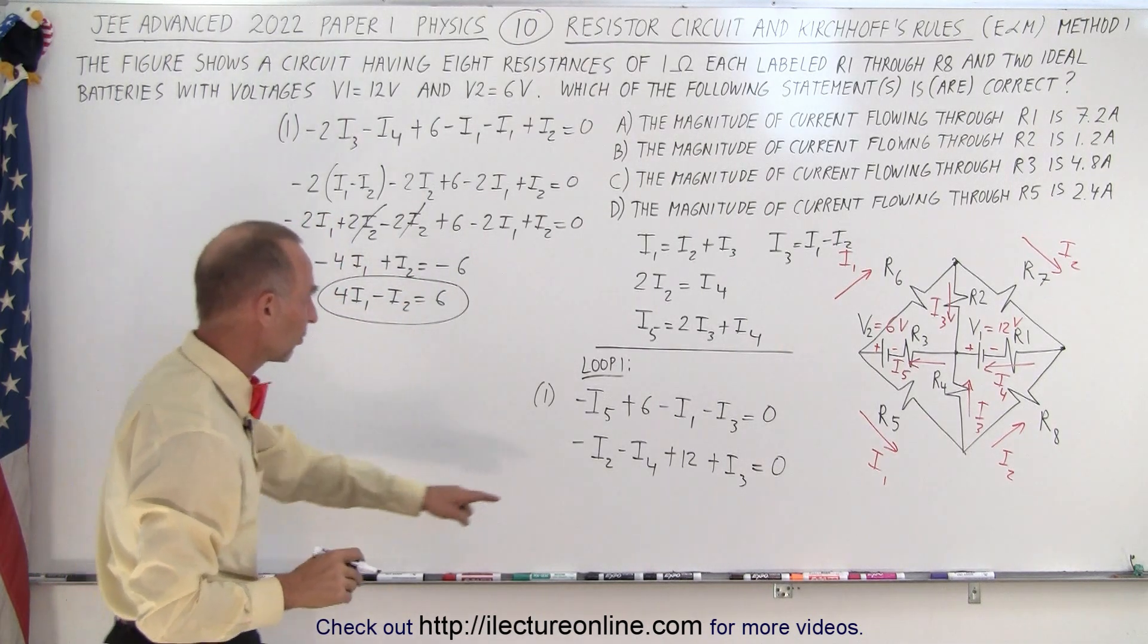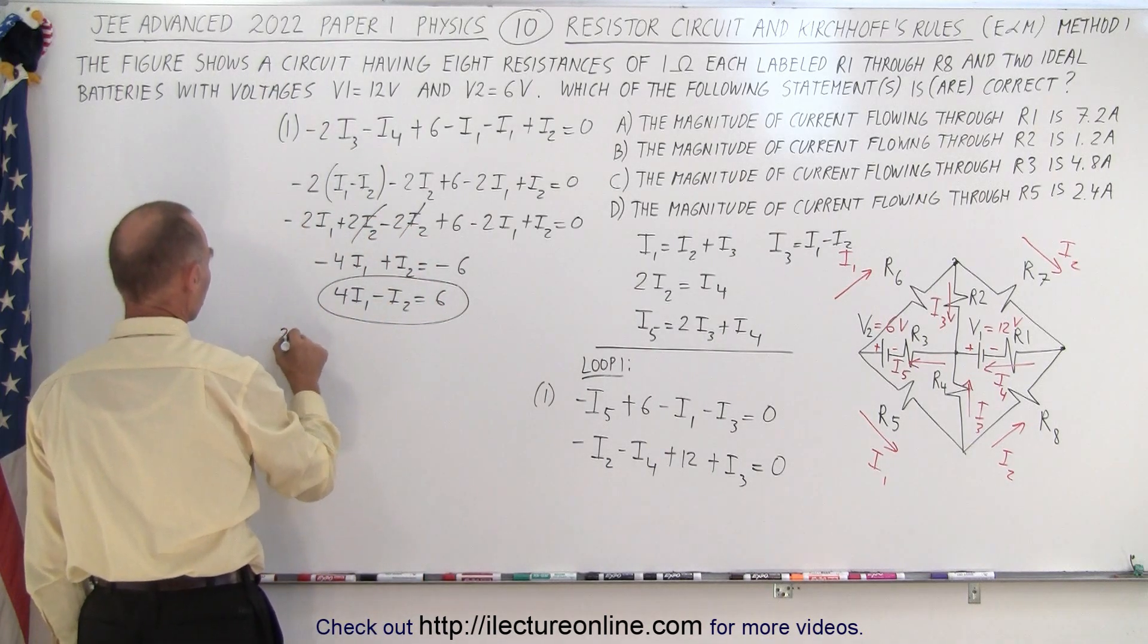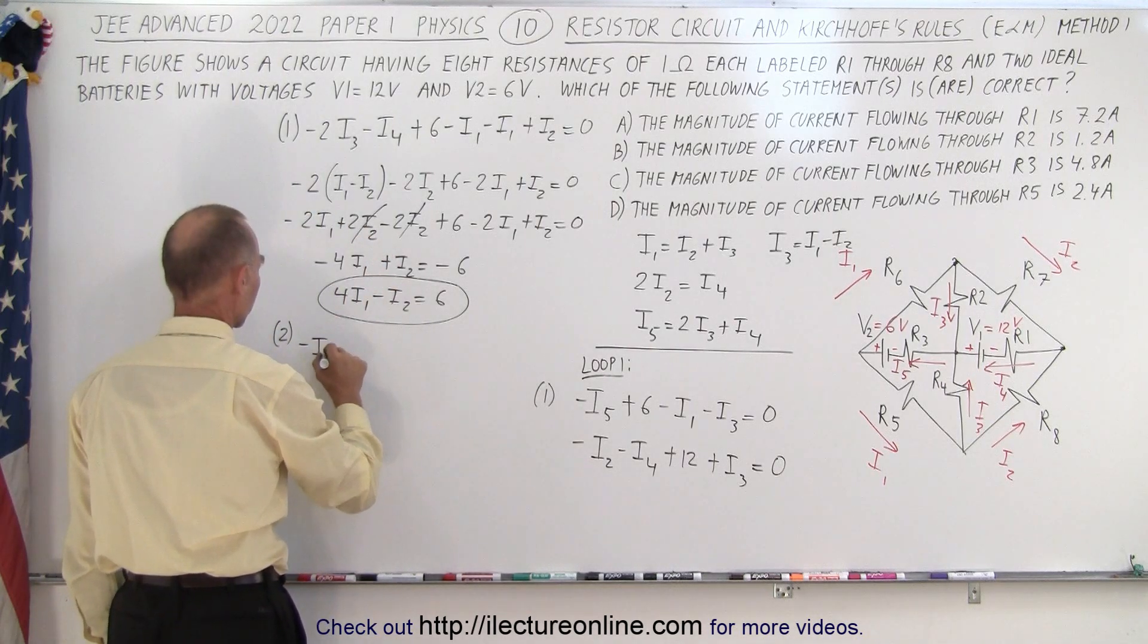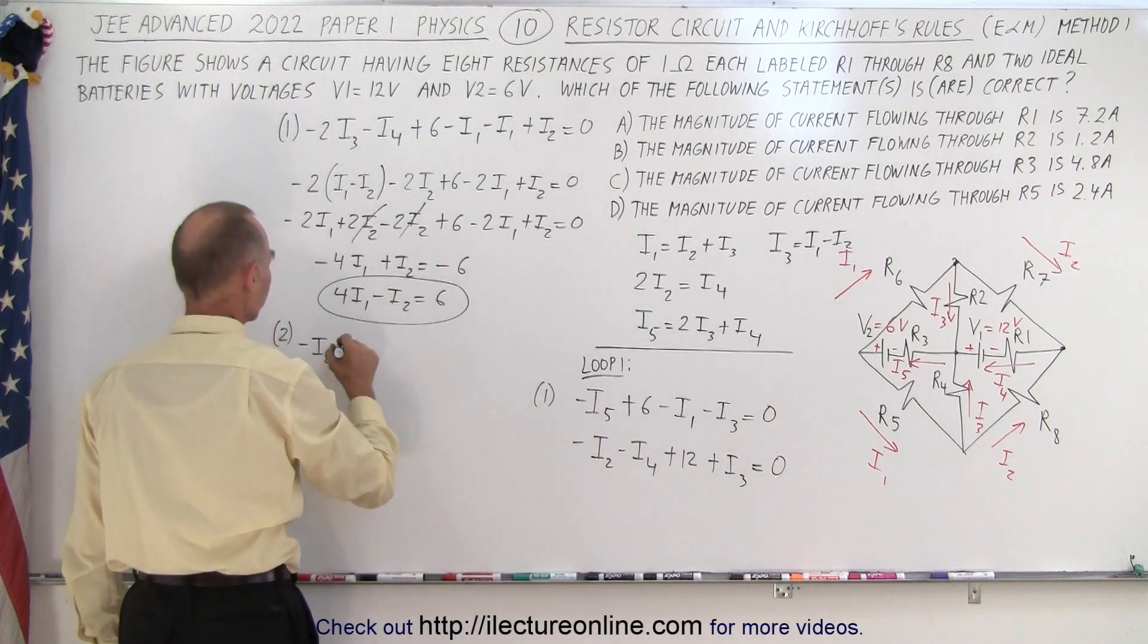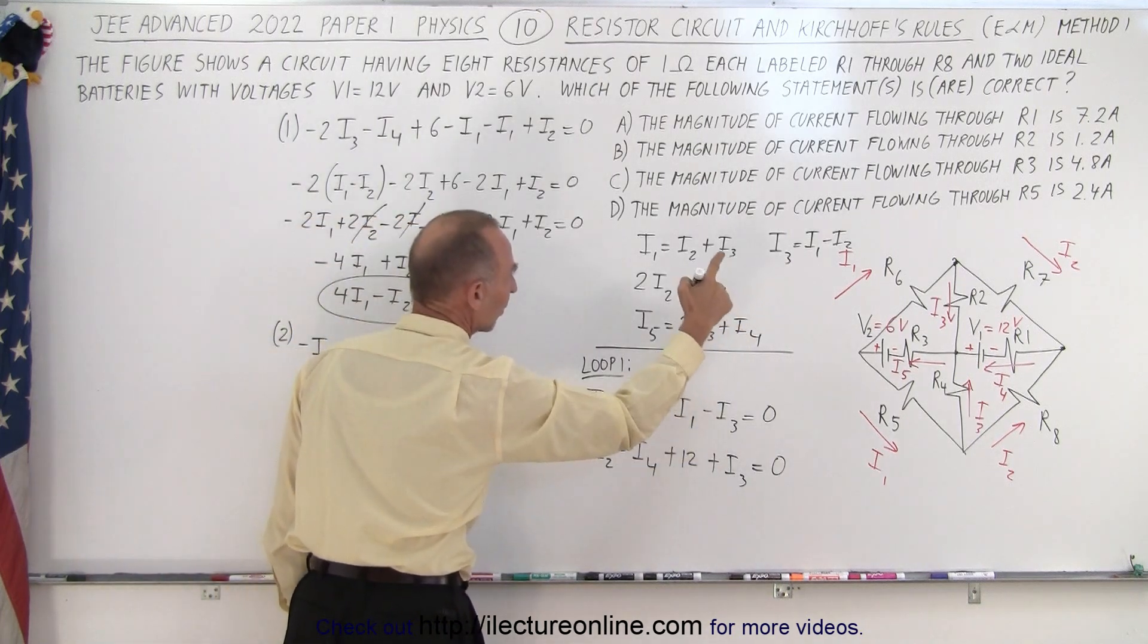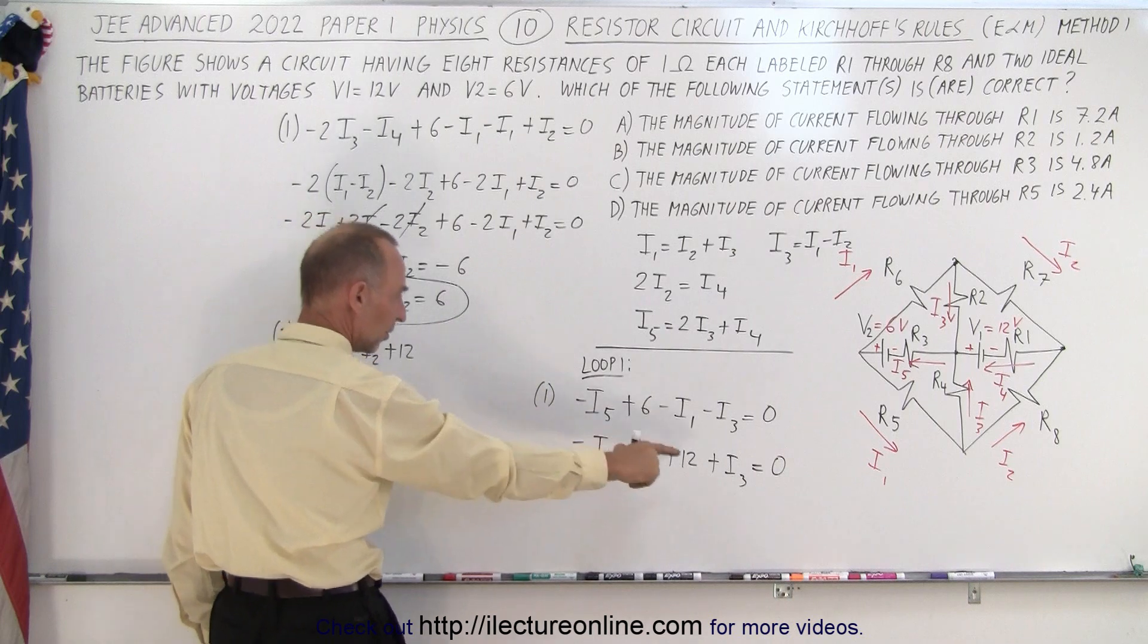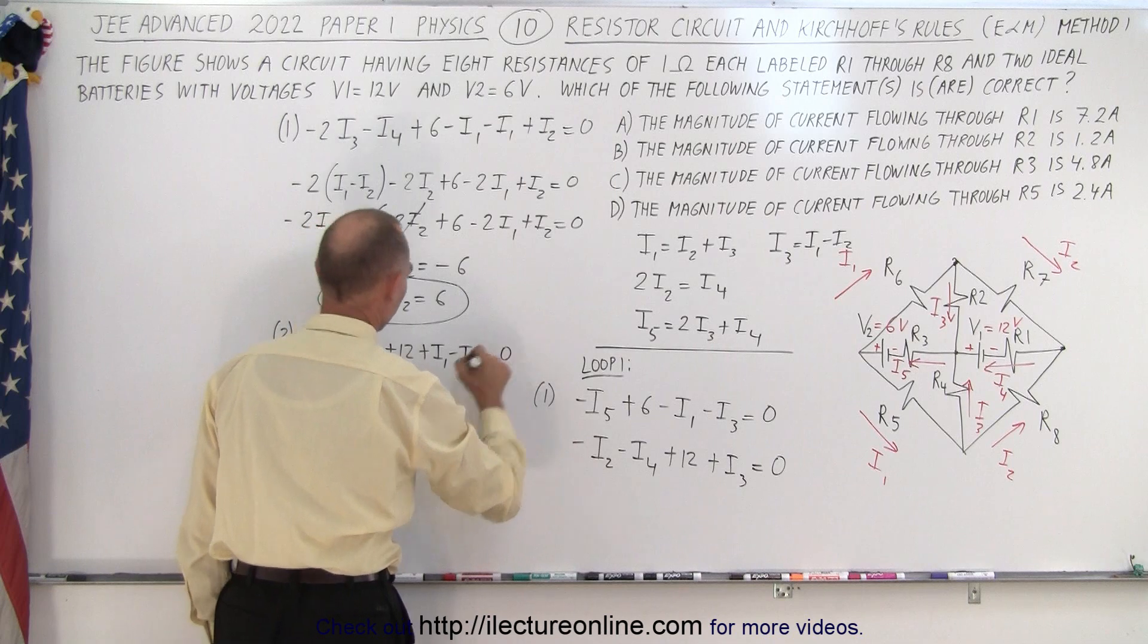I will do the same with the second equation. So here, for equation number 2, I have minus I2, minus I4, which can be replaced by minus 2I2, plus 12, plus I3, and I3 is I1 minus I2. Since that's a plus, we get plus I1, minus I2, equals 0.